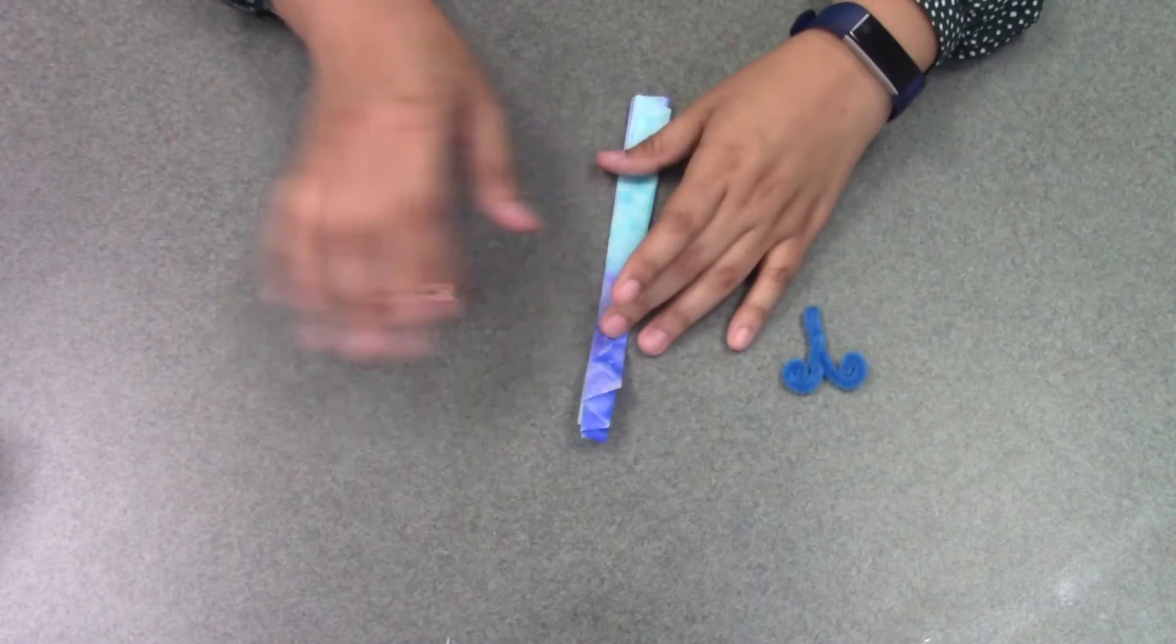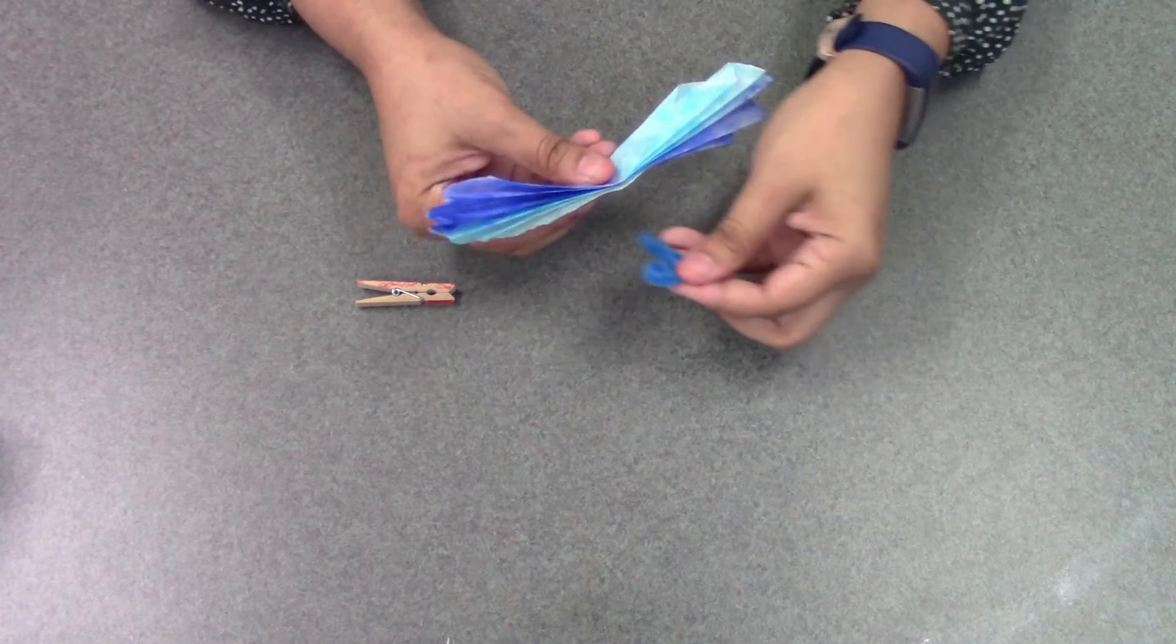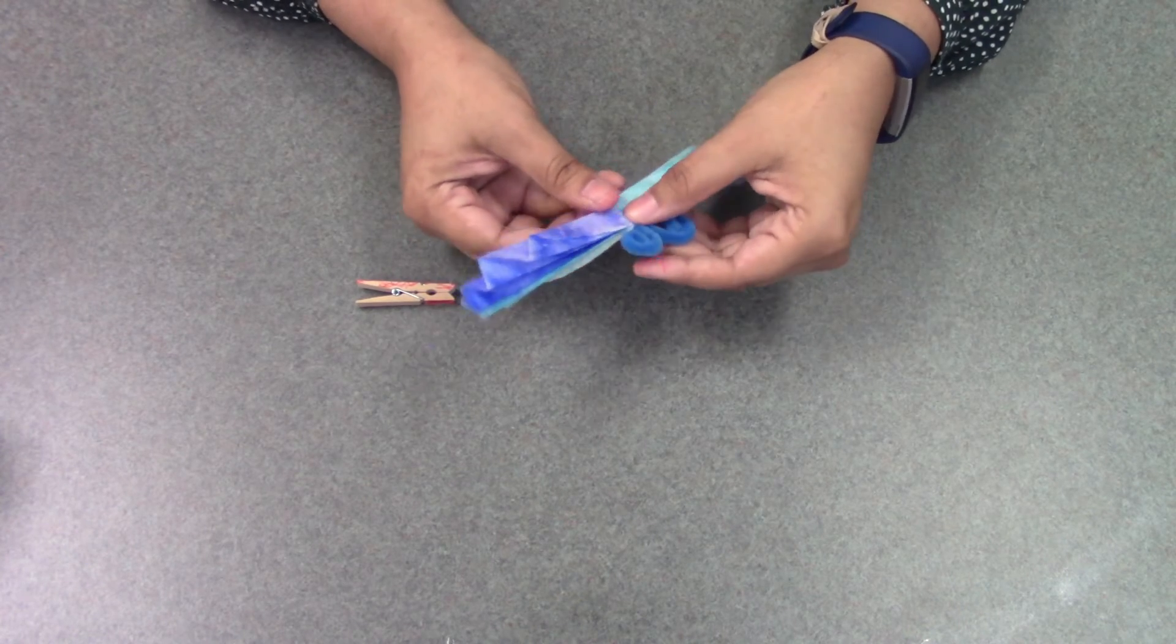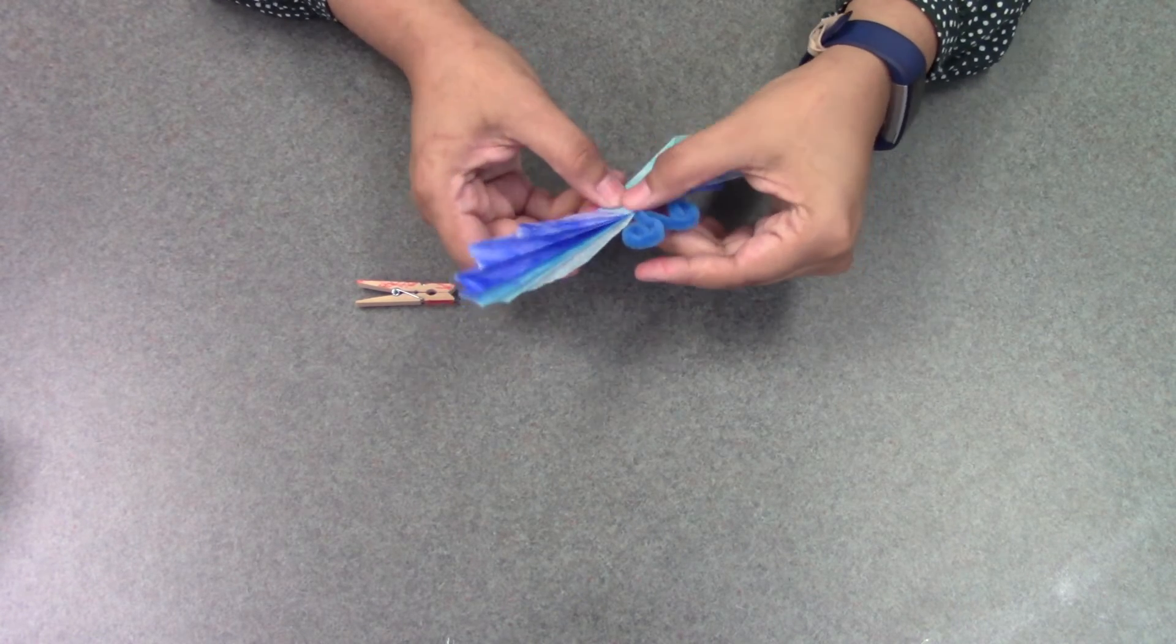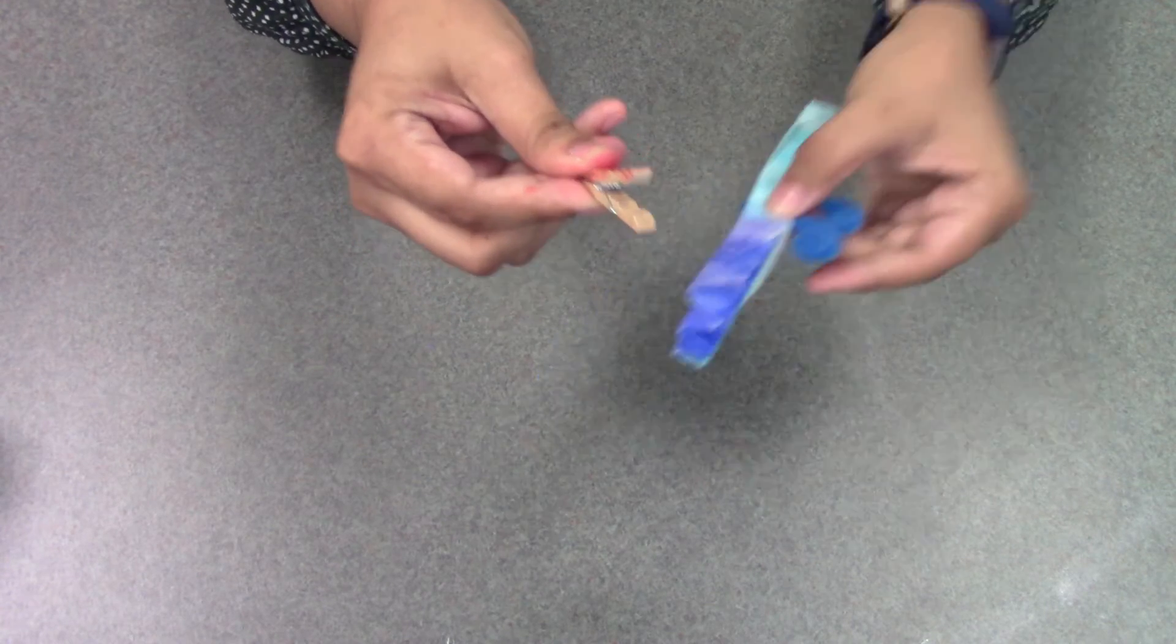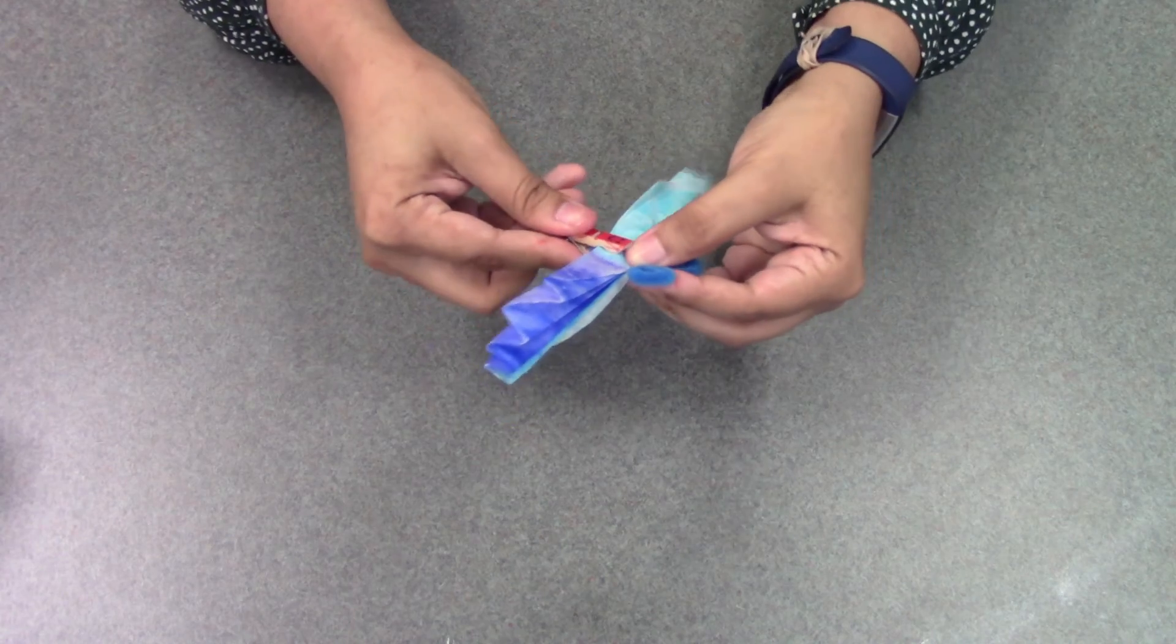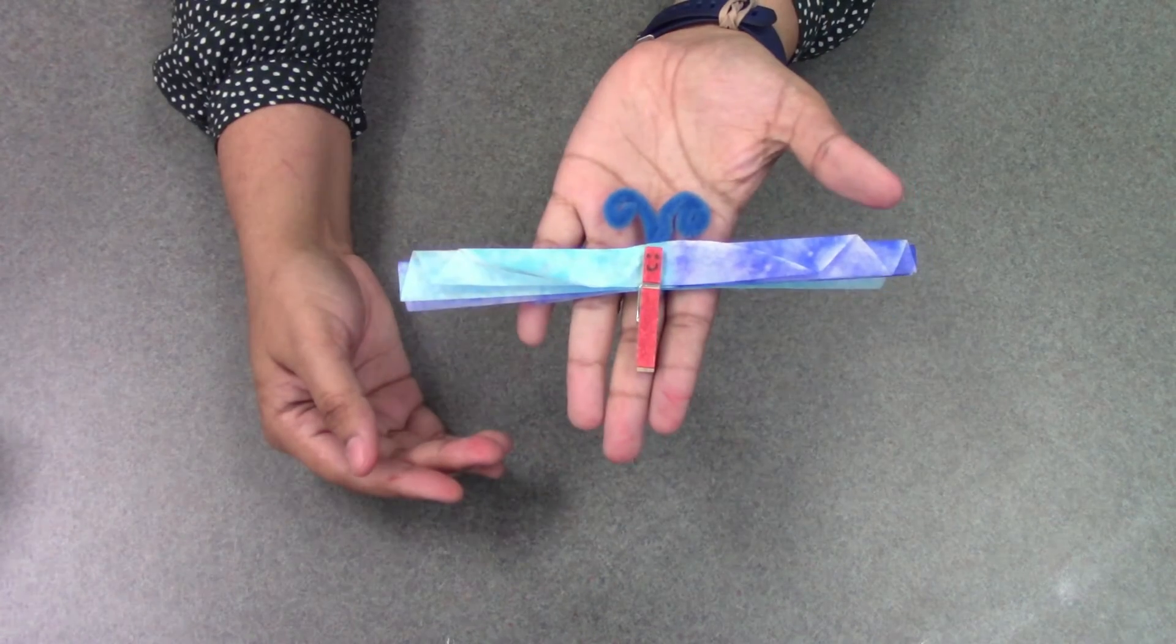Alright, so now we're going to put it all together. You're going to take your strip and take your little antenna and put the antenna behind the strip about the center of it. And then you're going to open your clothespin and put the antenna and the strip in between the two open top parts. So then your creation should look just like that.